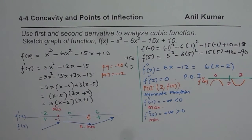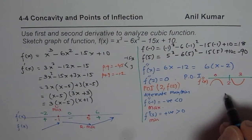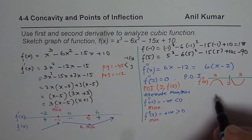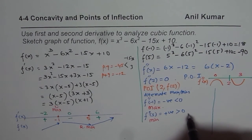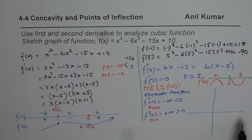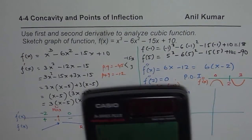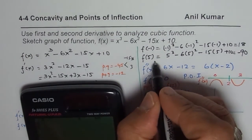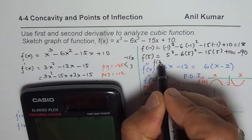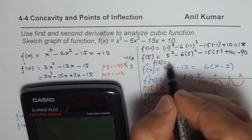So the rule is: if the first derivative is zero and the second derivative is negative, we have a maximum; if positive, we have a minimum. So we have found the local maximum, local minimum, and the point of inflection at x = 2. Let us find f(2) to complete the point of inflection. We calculate: f(2) = 2³ − 6(2²) − 15(2) + 10.